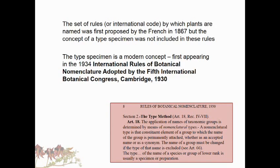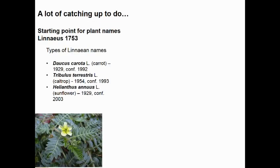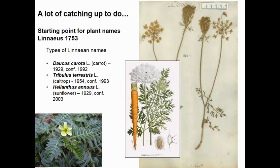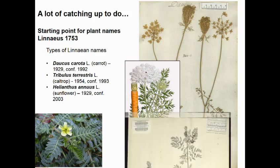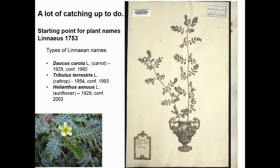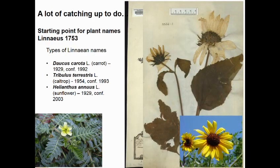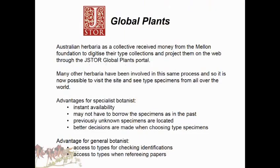The type specimen concept first appeared in the 1934 international rules of botanical nomenclature, passed at the meeting in Cambridge in 1930. We've got a lot of catching up to do because plant names date back to 1753. Here's an example: the carrot's type specimen was only proposed in 1929 and confirmed in 1992. The same applies to Tribulus and the sunflower - Linnaean type specimens only recognized relatively recently.